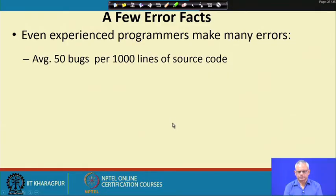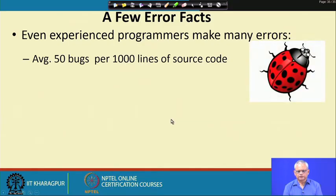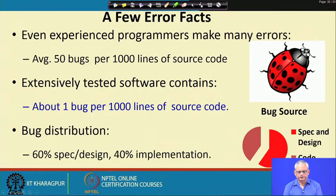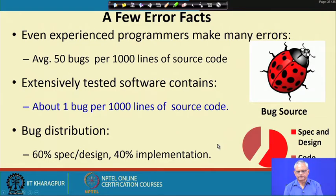Let us look at some facts about errors. Even the most experienced programmers make mistakes. A typical industry average is 50 bugs per 1000 lines of source code for good programmers. Testing reduces the number of bugs; after thorough testing about 1 bug per 1000 lines of source code still remains. What are the origins of these bugs? About 60 percent can be traced to specification and design, and about 40 percent from code.